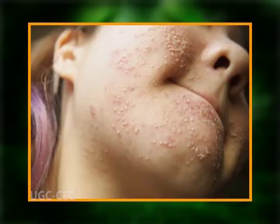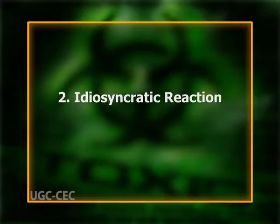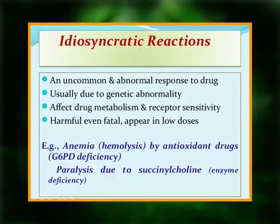Once exposed, a toxicant can cause a number of undesired effects, including: allergic reactions — an immunologically mediated adverse reaction to a chemical resulting from previous sensitization or hypersensitivity; idiosyncratic reactions — a genetically determined abnormal reactivity to a chemical, occurring rarely and unpredictably amongst the population; and immediate versus delayed toxicity — immediate toxic effects develop rapidly after a single administration, whereas delayed toxic effects occur after the lapse of some period of time.